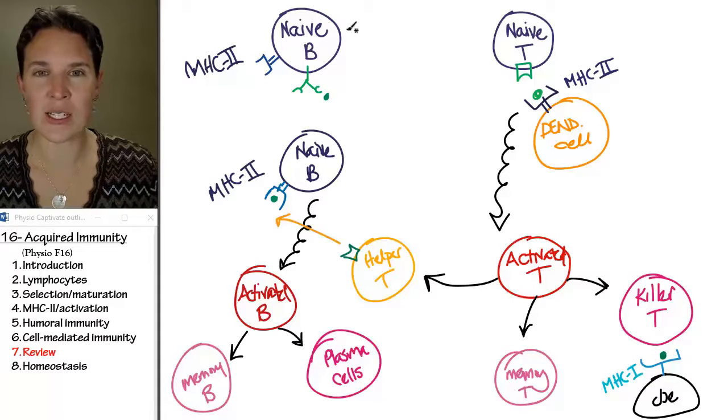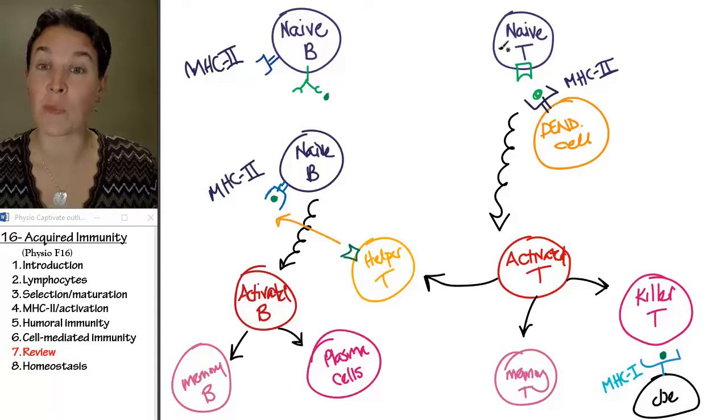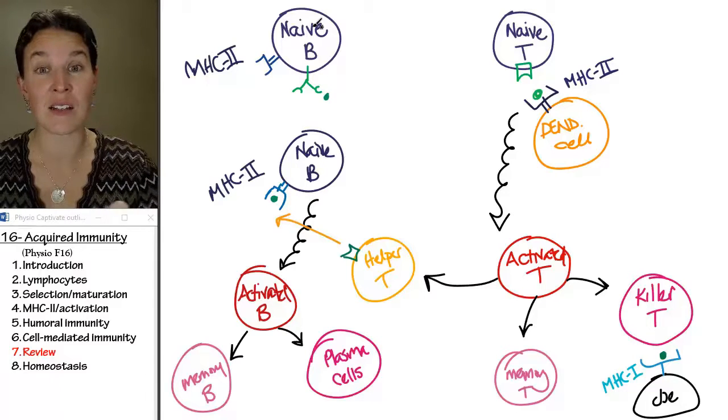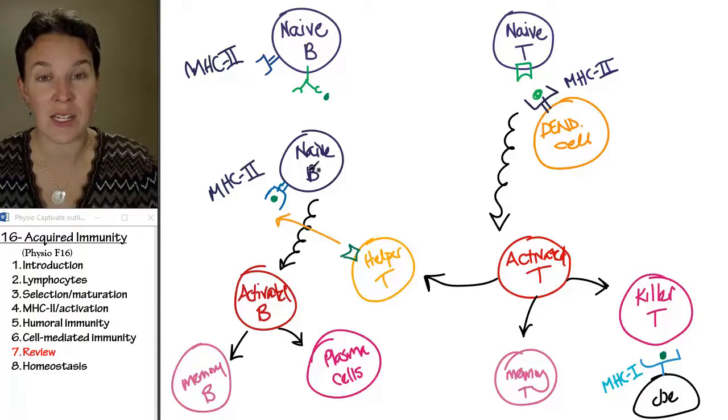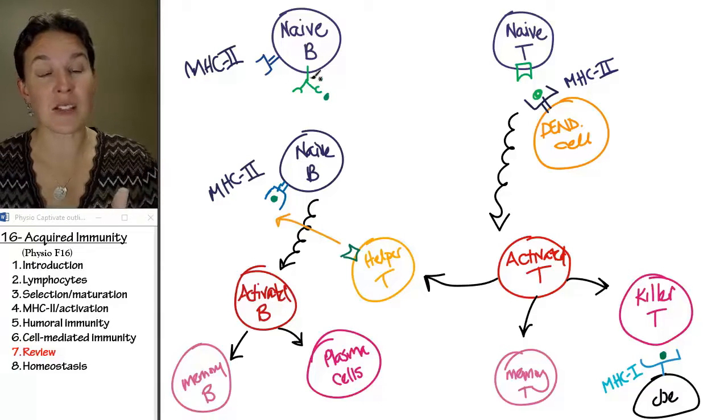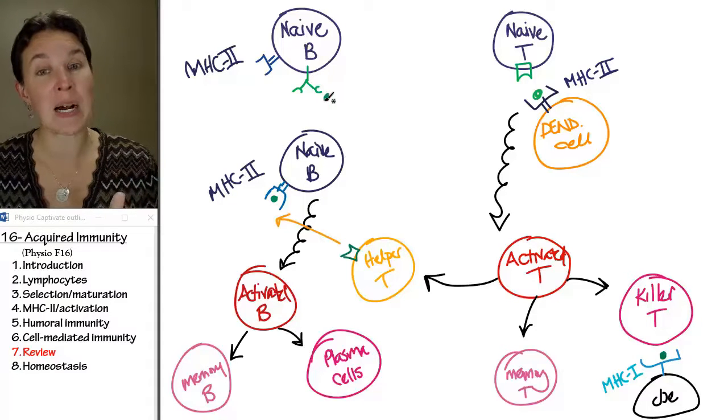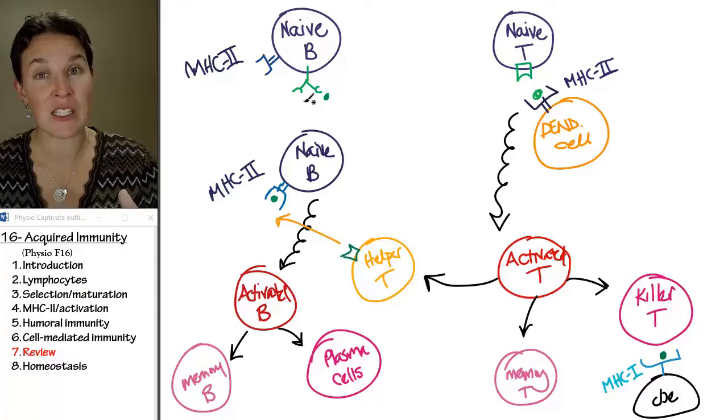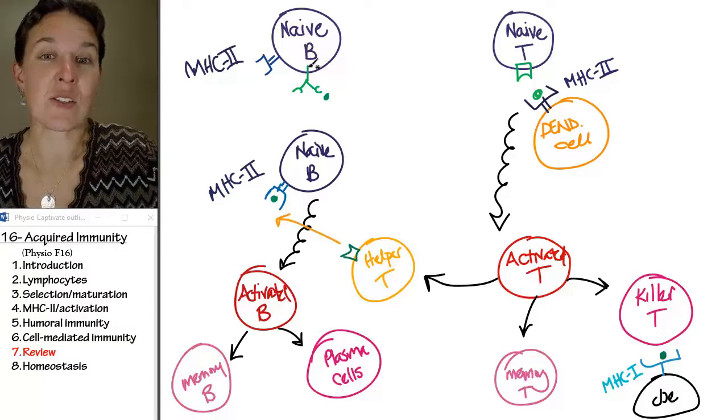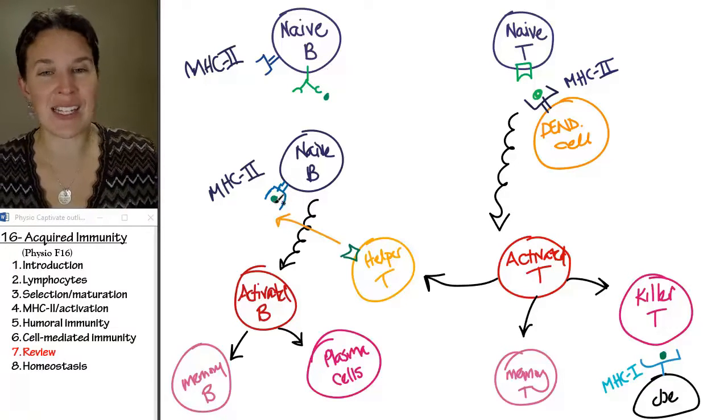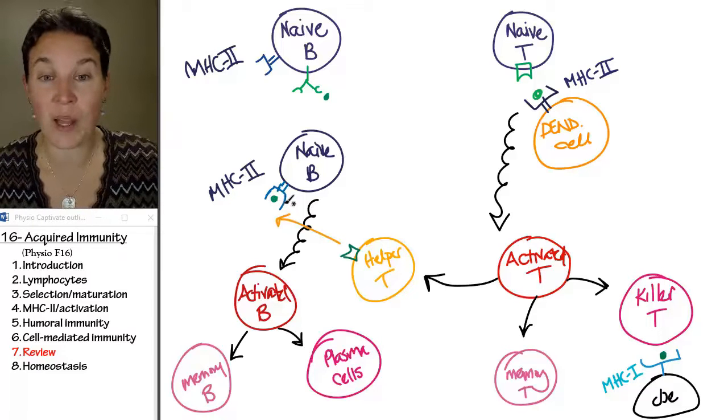If you'll notice, this is supposed to be purple cells, which are naive cells, so both B cells and T cells start out as naive. The B cells, what's relevant is that they bind, the antigen binds with their antibody receptor. They endocytose that, and then they present it out on an MHC II platform.